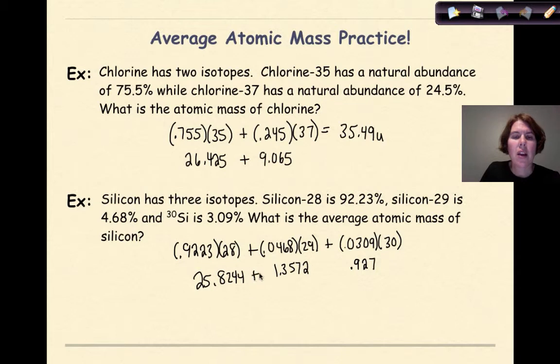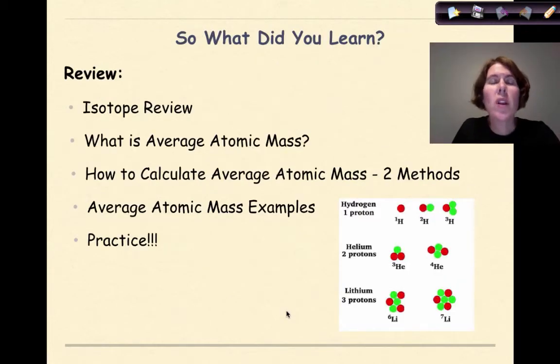So if I add all of these up, I should get a final answer of 28.1u, if I've done my math right. And again, the best thing always to do is, if you know that you're dealing with this type of situation, go to your periodic table, check the average atomic mass that's listed on there. Your answer should be relatively close. So what did we learn in this little tutorial?